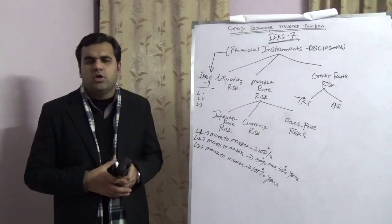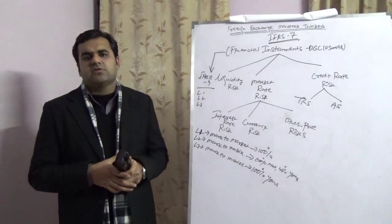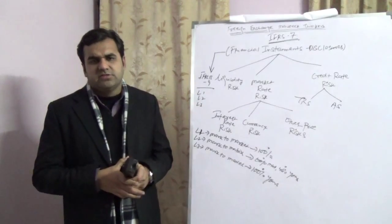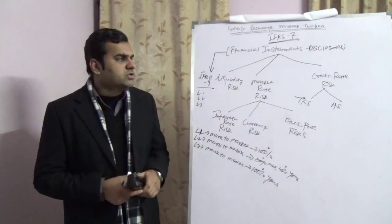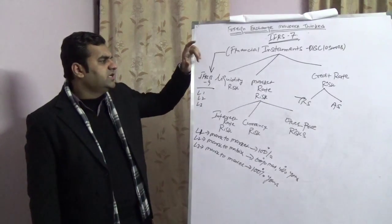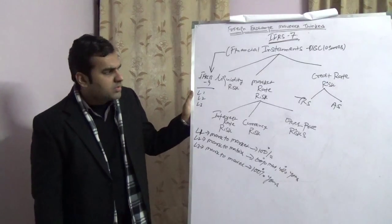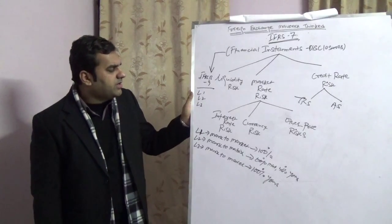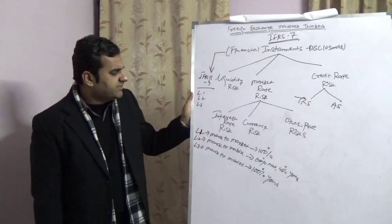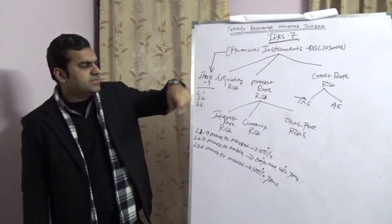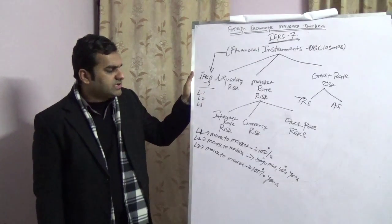So in a nutshell, to cut it short, IFRS 7—the critical or the key part of IFRS 7—is to speak about all kinds of disclosures, whether it's a quantitative disclosure or a qualitative disclosure. In both kinds of disclosure, IFRS 7 talks about three kinds of risk: one is liquidity risk, market risk, and credit risk. Market risk speaks about interest rate risk, currency risk, and other price risk. On the other hand, credit risk speaks about total return swap or asset swap.